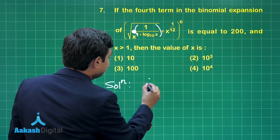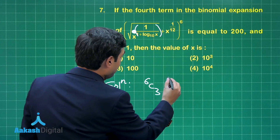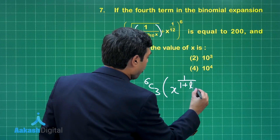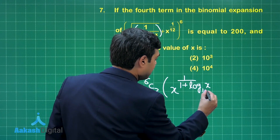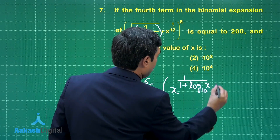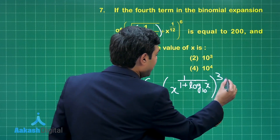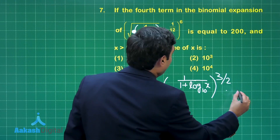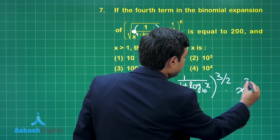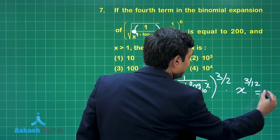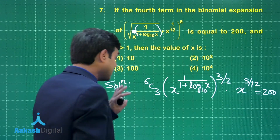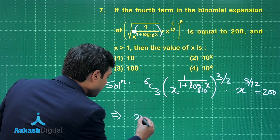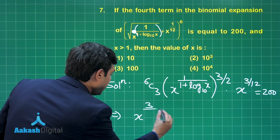If we consider 6C3 multiplied with x to the power 1 upon (1 + log x to the base 10), whole cube raised to the power half — because a root was there — multiplied with x to the power 3/12, this is equal to 200. Now 6C3 is 20, so simplifying we have x raised to the power 3/2 multiplied with (1 + log x) in the denominator, into x raised to the power 1/4, equal to 10.